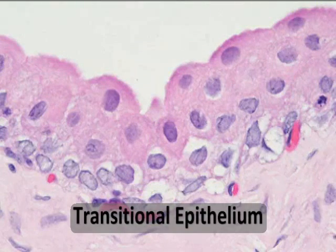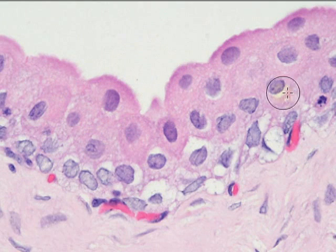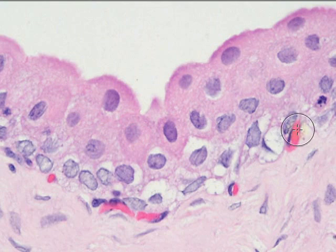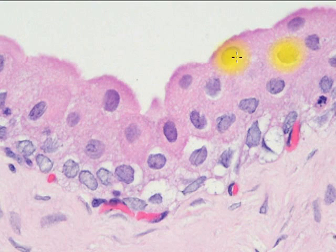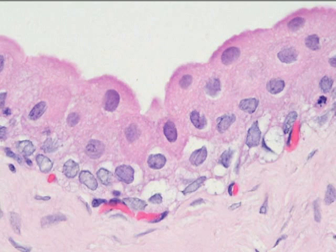Our next epithelial tissue is transitional epithelium, and when you look at this tissue, it doesn't really have any one distinct shape like the others have. It sometimes looks when it's stretched out like squamous tissue, and when it's more relaxed like we see here, it resembles more cuboidal cells. We see the nucleus and kind of the roundish cell.